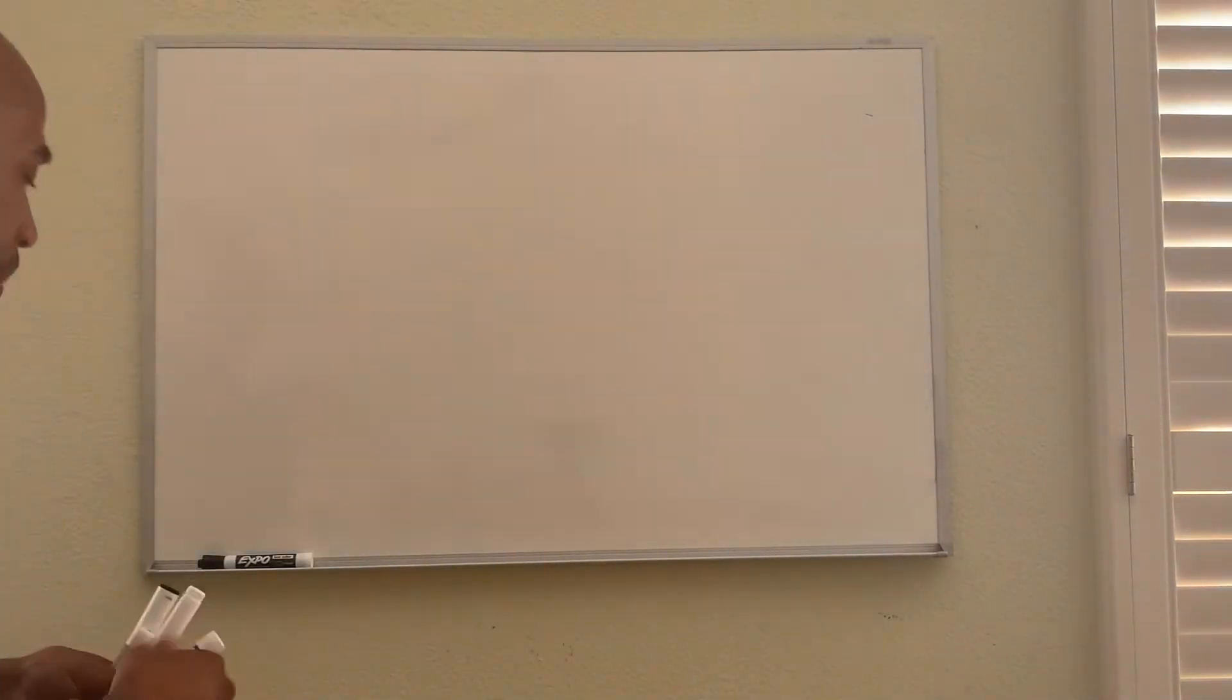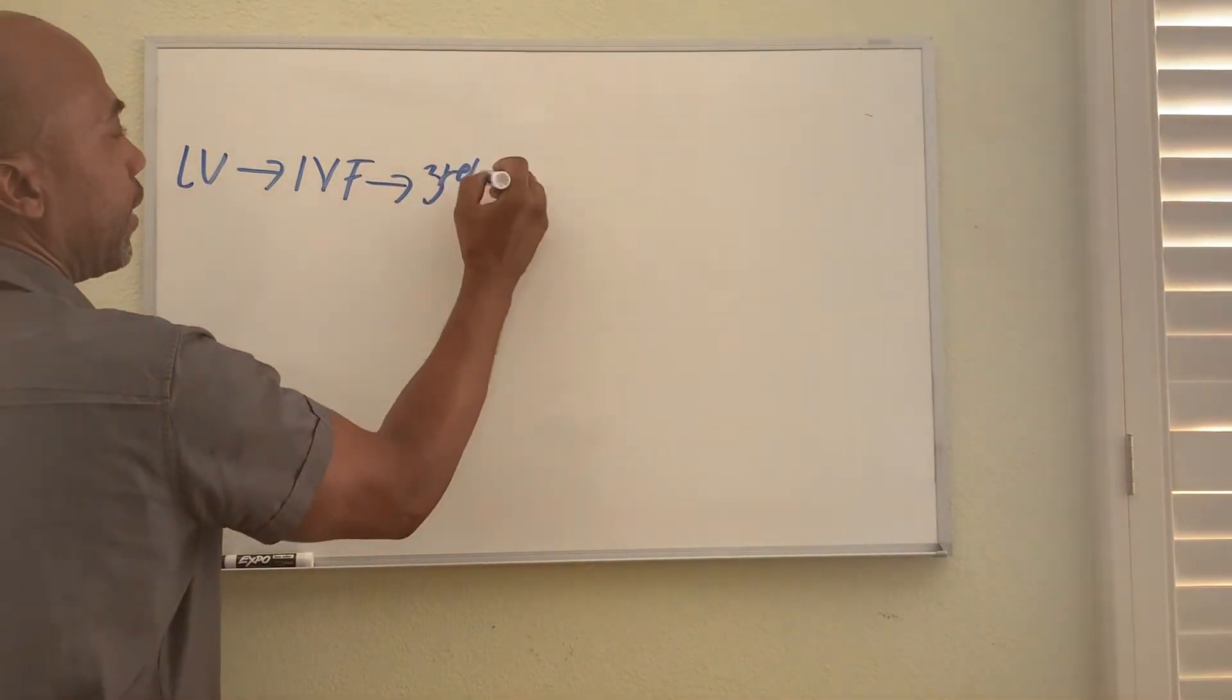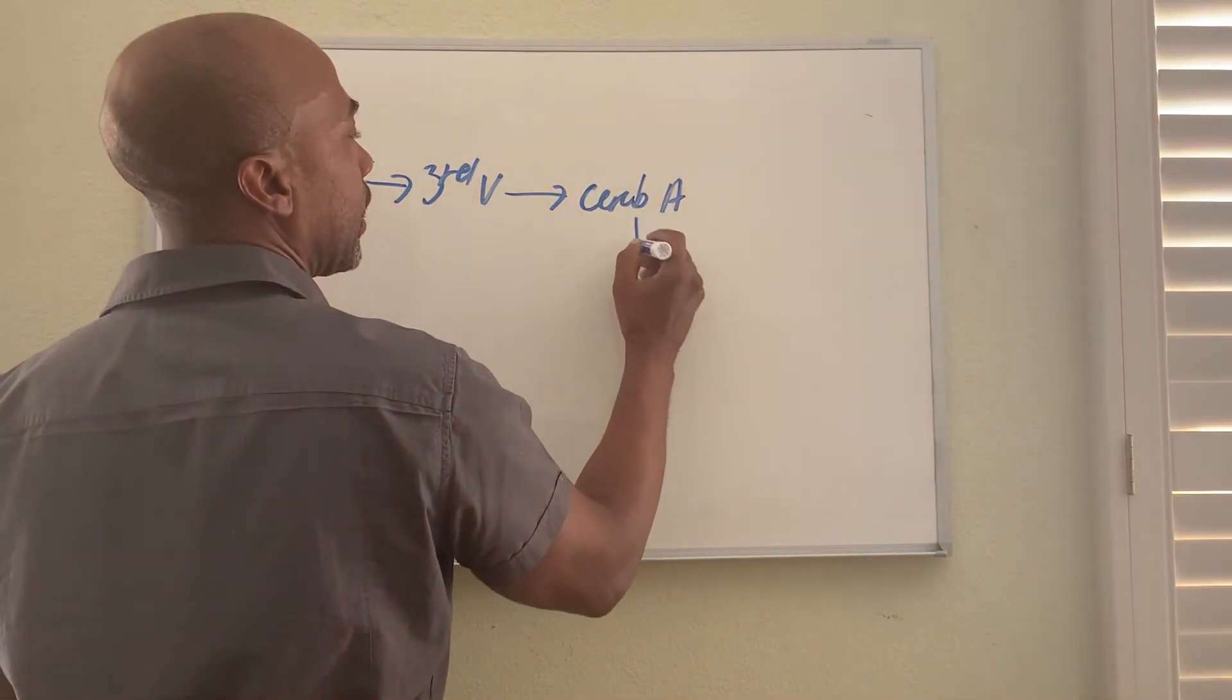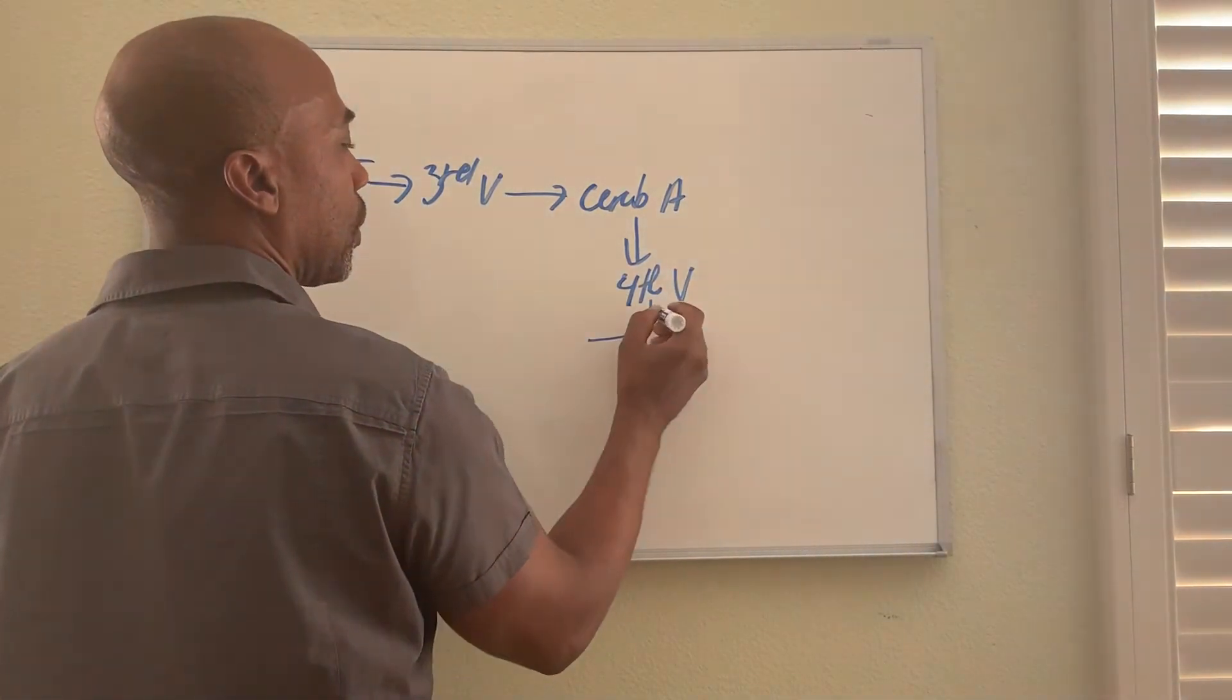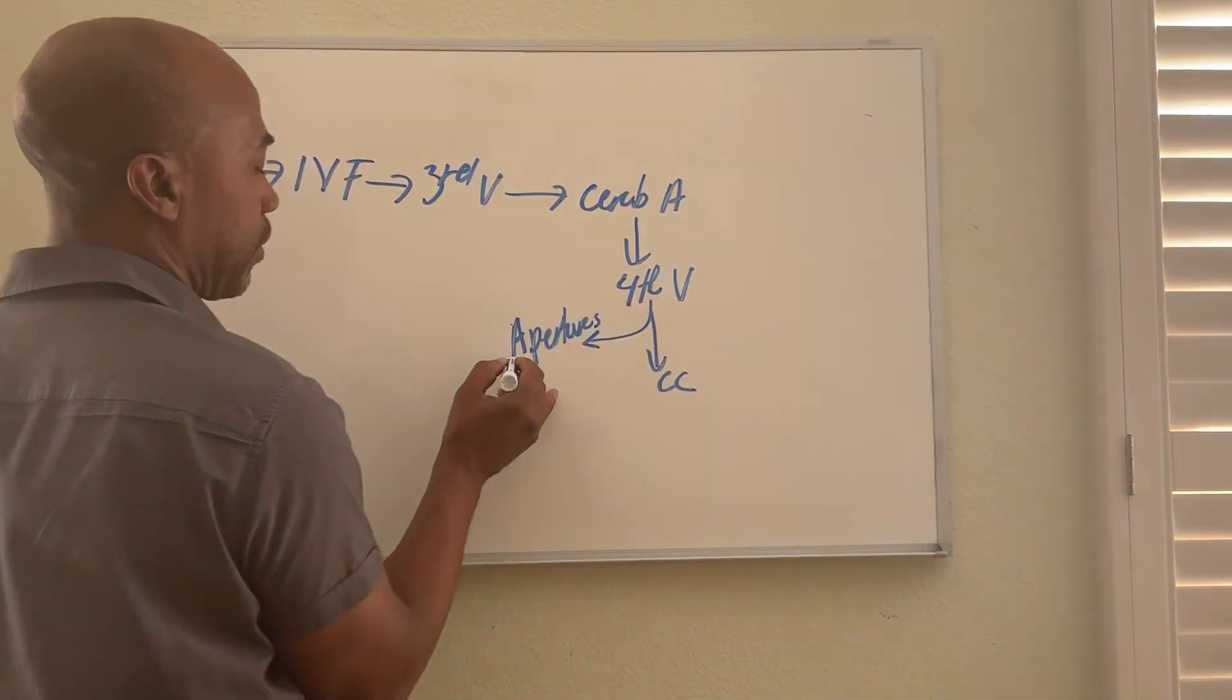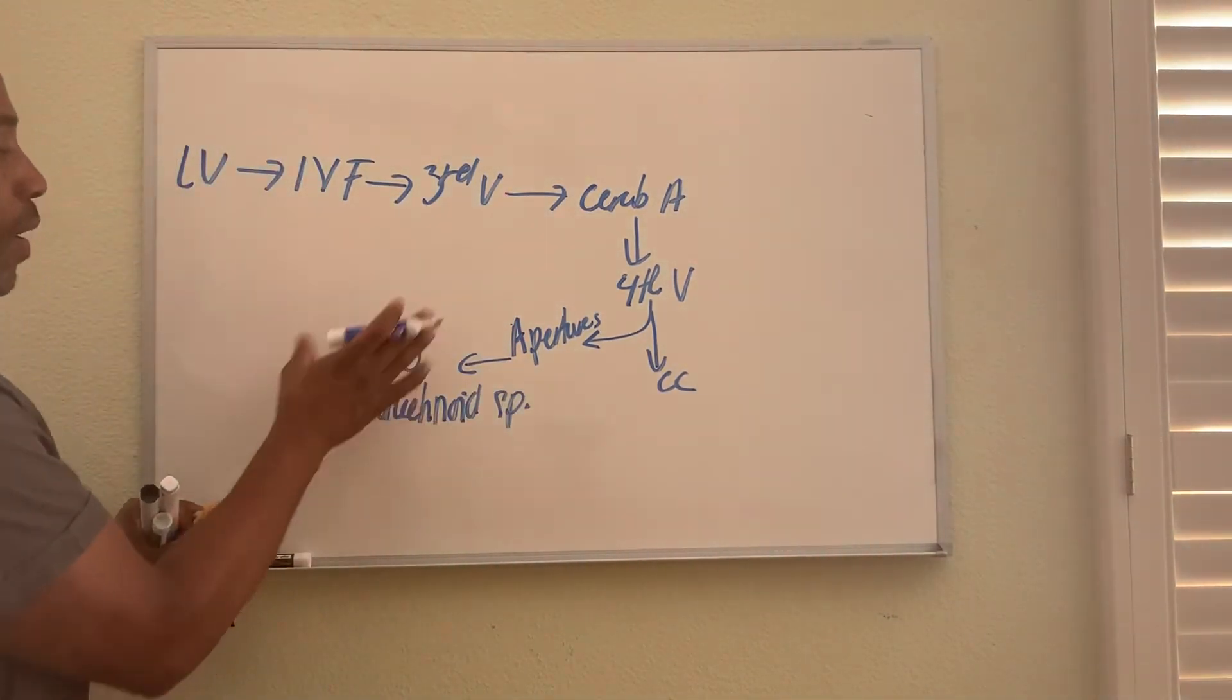So quick recap: it's lateral ventricle to interventricular foramen into third ventricle, through your cerebral aqueduct into fourth ventricle. Then some of it will go into the central canal, some will pass into the apertures. From there it escapes into your subarachnoid space, and now it's around the brain.